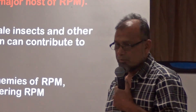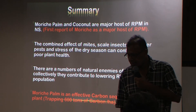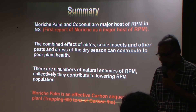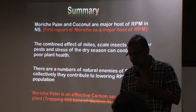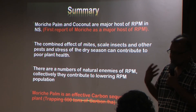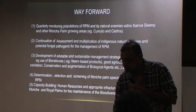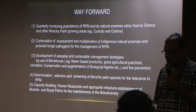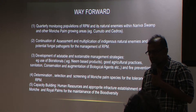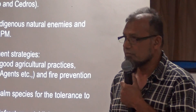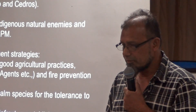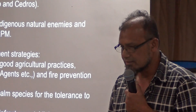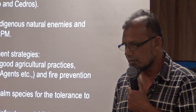In summary, the Moorish palm and coconut are the major hosts in the Nariva Swamp. The combined effects of mite, insects, pests, and stress will affect plant health. There are a number of natural enemies observed. The Moorish palm is an important carbon sequestration species and therefore efforts should be made to plant and rejuvenate the Nariva Swamp with more of these palms. The way forward includes more monitoring, continuation of assessment and multiplication of indigenous predators, development of adaptable and sustainable management practices, determination and screening of Moorish palm species, and training people with adequate facilities to propagate plants for the swamp.